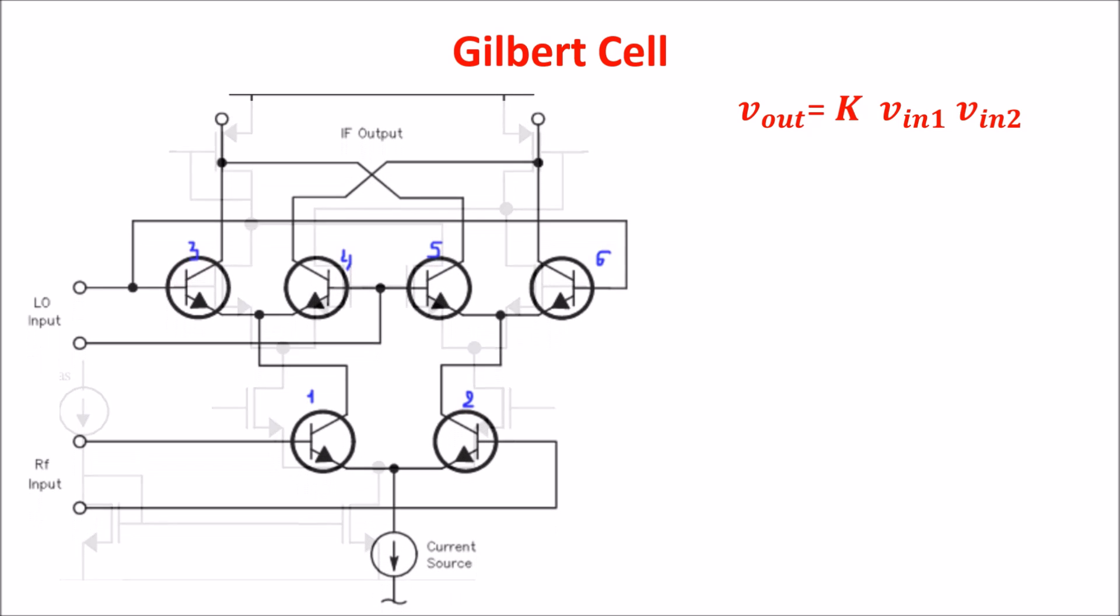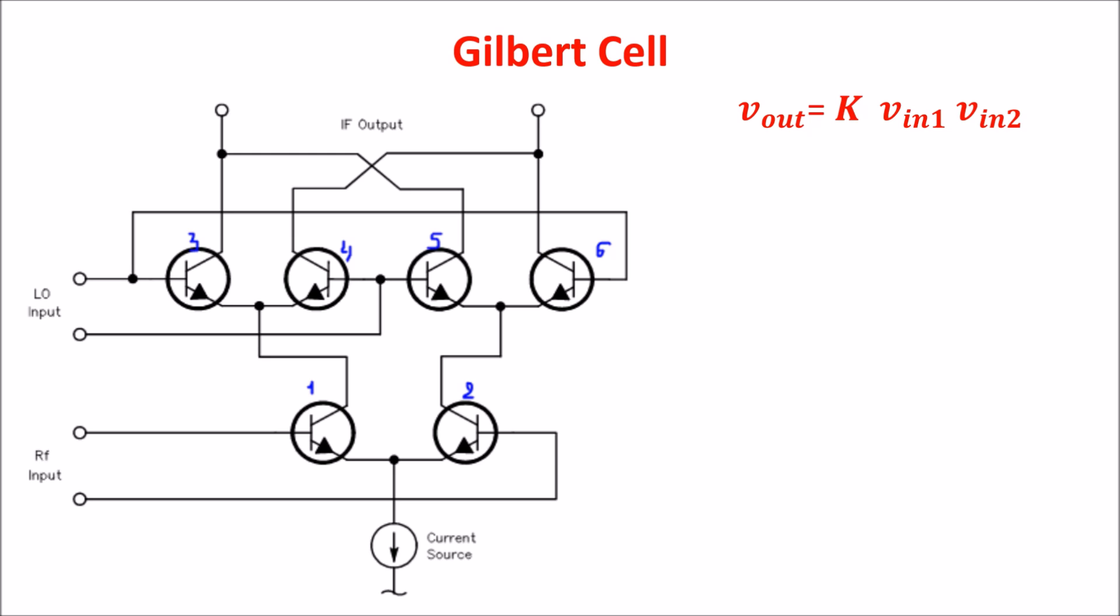Here we see a Gilbert cell used as double-balanced mixer for the receiver. The input of the local oscillator is this, and the RF signal is applied here, while the output at the intermediate frequency is taken here, where we have to add a circuit to transform the current into voltages.